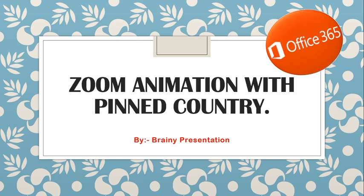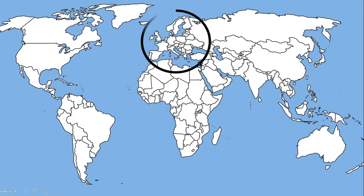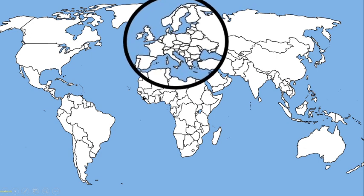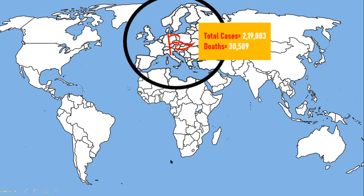This zoom animation with pin country looks like this: on a click, the country of Europe gets highlighted. On a second click, a flag comes from below which pins to the country of Italy. A box shows COVID-19 data — total cases in Italy: 2,19,083 and total deaths confirmed: 30,589 as of 10th May. If you watch later, this data may be outdated, but you can pin any country you like.